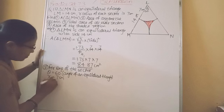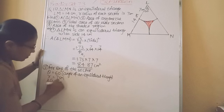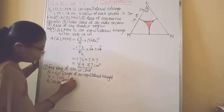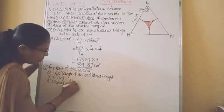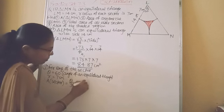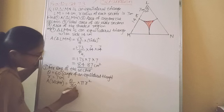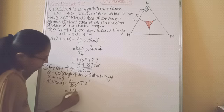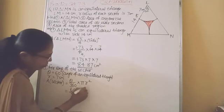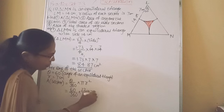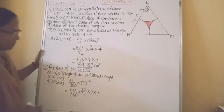Therefore, area of sector is equal to theta upon 360 into pi R square. Theta 60 upon 360 into 22 upon 7 into 7 into 7.